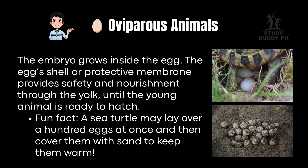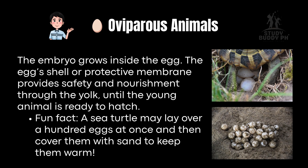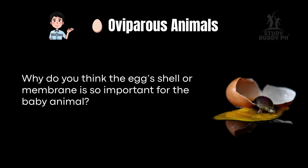The embryo grows inside the egg. The egg's shell or protective membrane provides safety and nourishment through the yolk until the young animal is ready to hatch. Fun fact: a sea turtle may lay over a hundred eggs at once and then cover them with sand to keep them warm. Why do you think the egg's shell or membrane is so important for the baby animal?